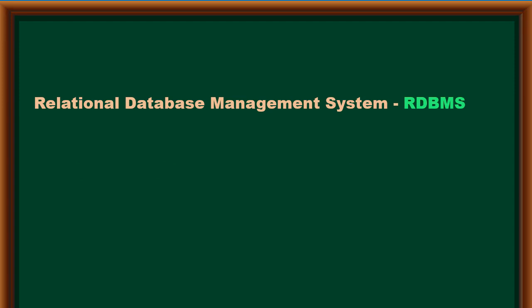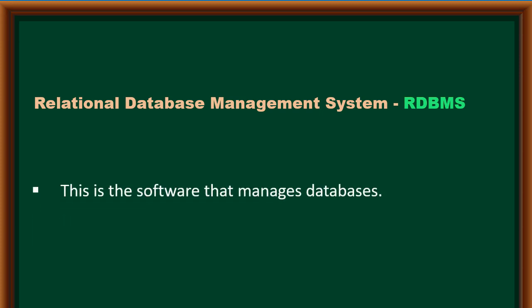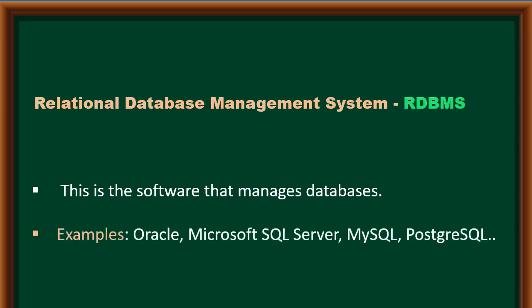A Relational Database Management System — also known as RDBMS — is basically software used to manage databases. There are several types of RDBMS depending on the vendor. Examples include Oracle, Microsoft SQL Server, MySQL, PostgreSQL, and many others.